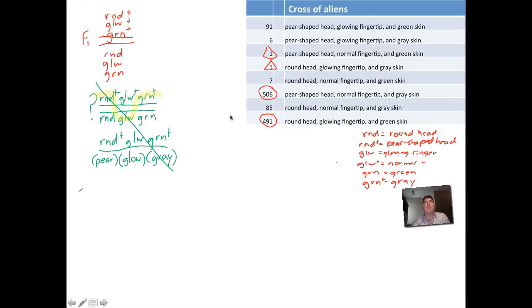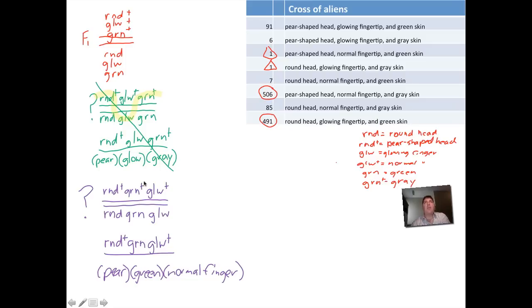Let's in this case throw the alien skin color in the middle, so we've got round green glow. Notice that this is the same genotype as in our original F1, so we're testing this out, and then when we check through it we find out that indeed when we do a crossover we get RND plus GRN GLW plus, and that's pear green normal finger, and that fits with one. We're going to accept this as the gene order.